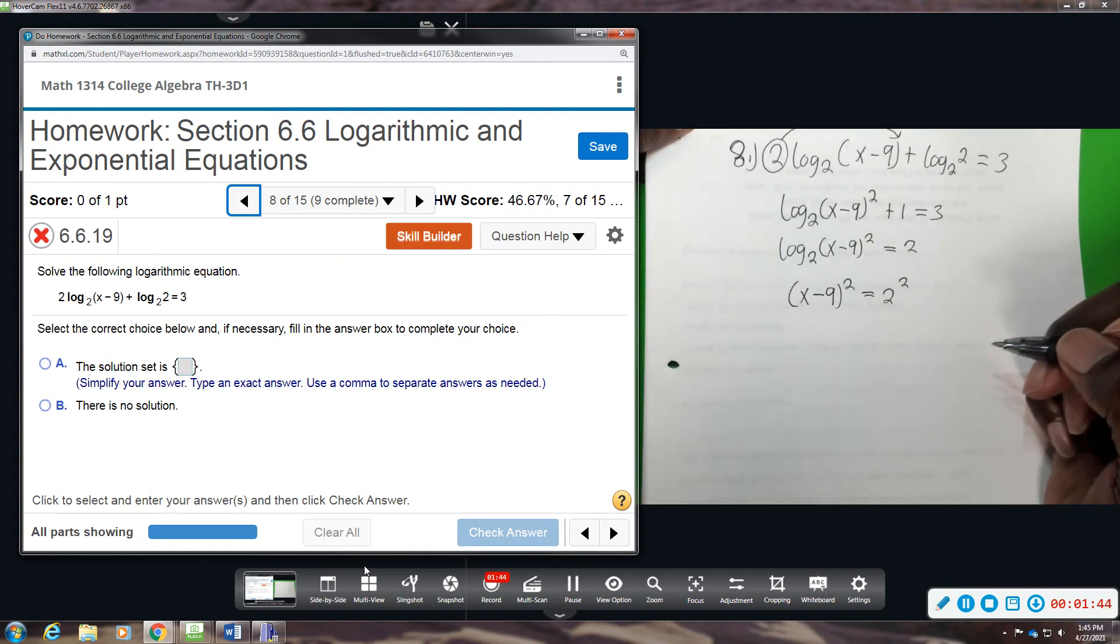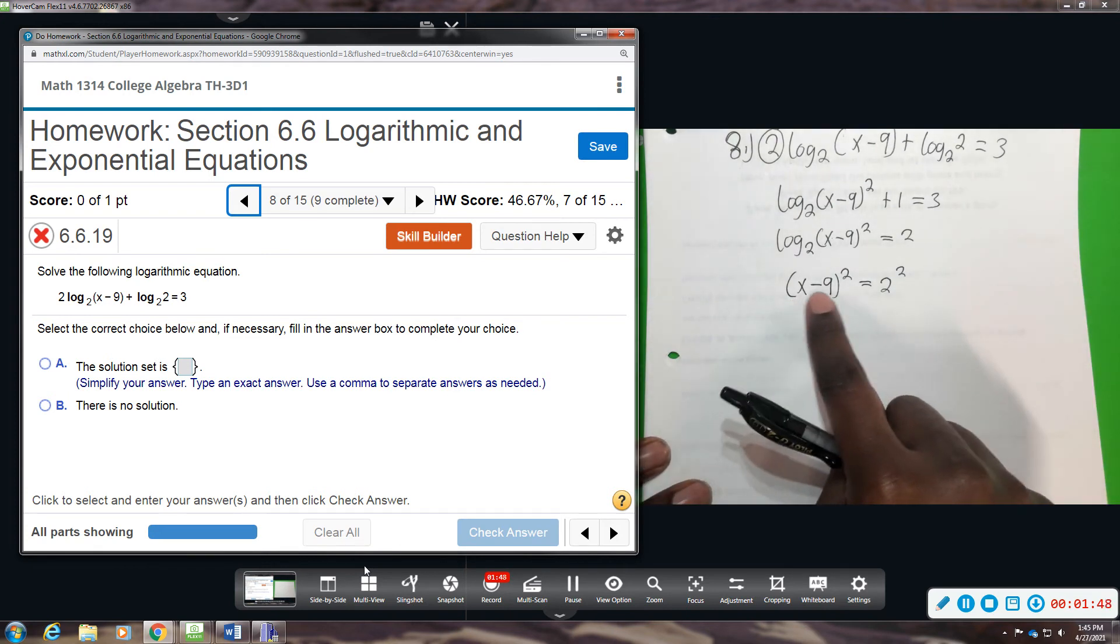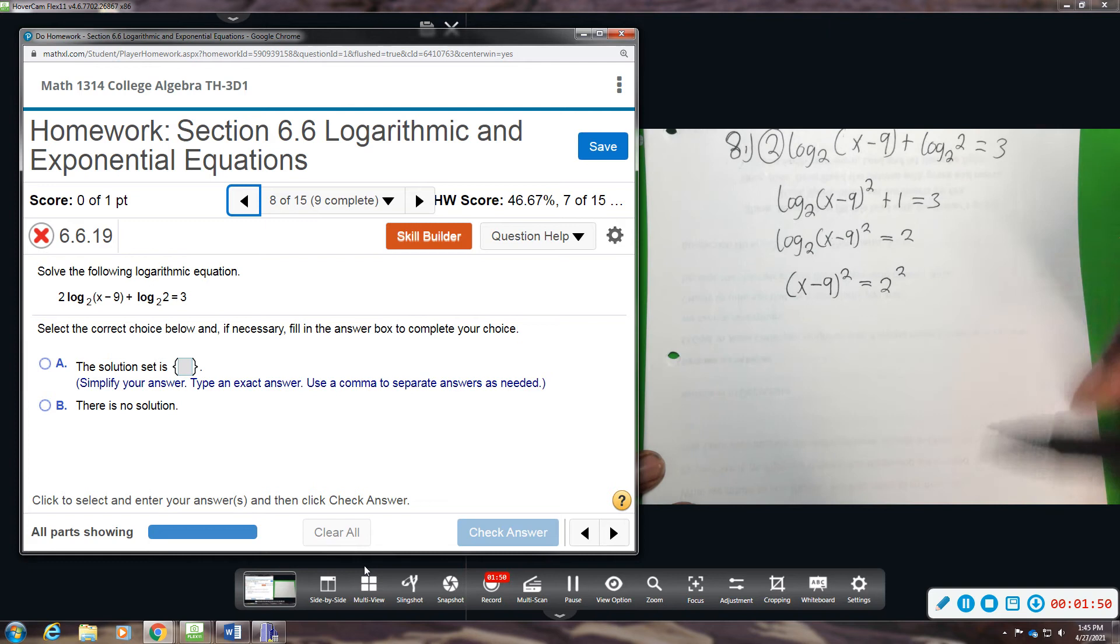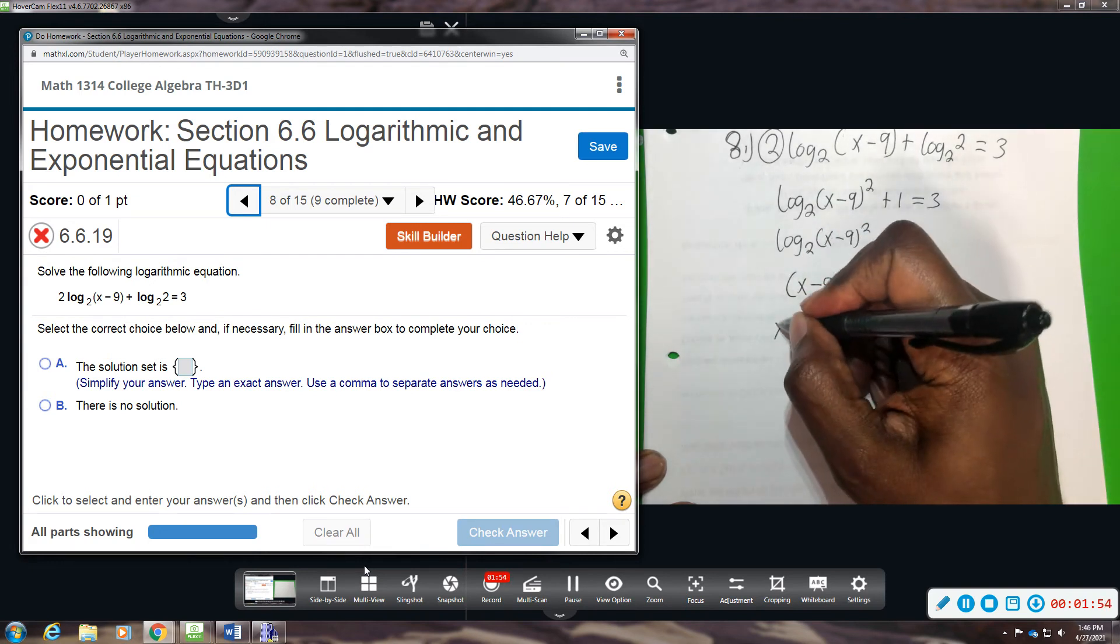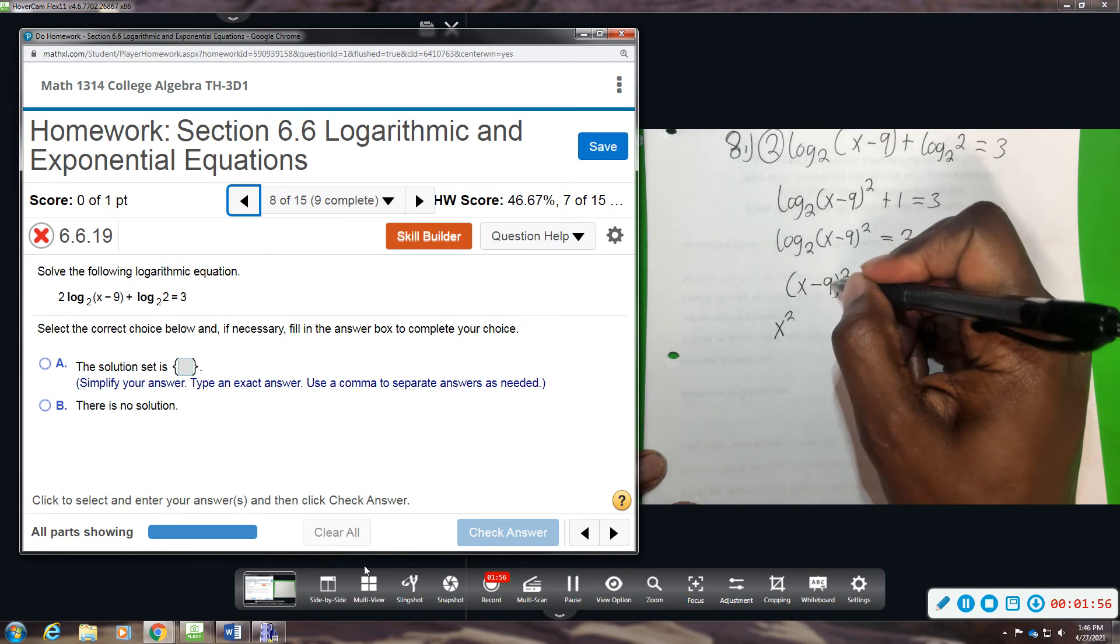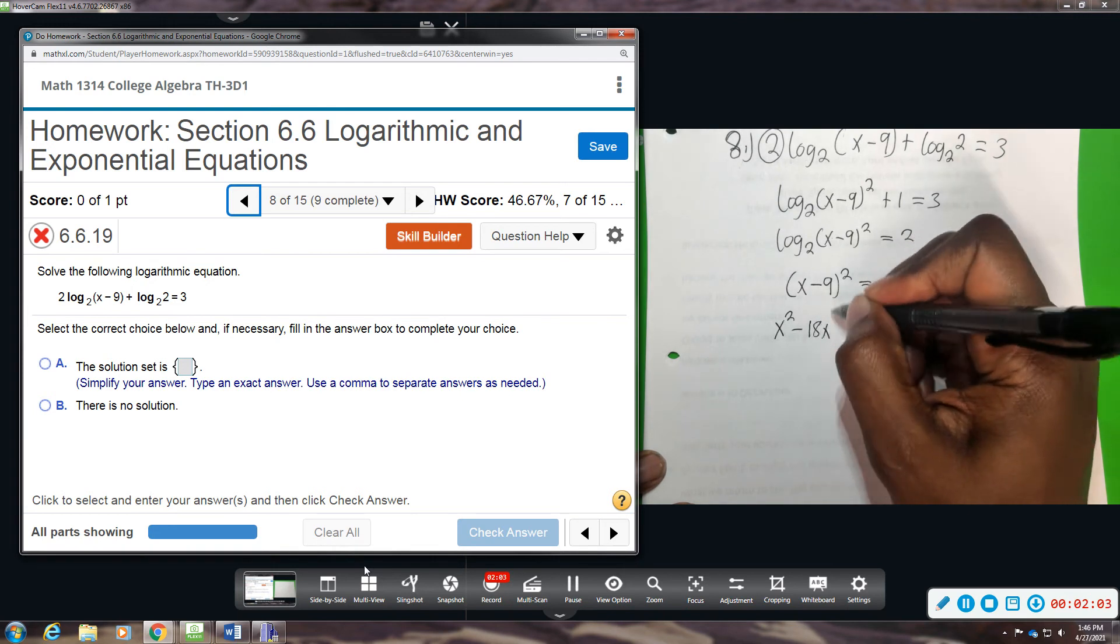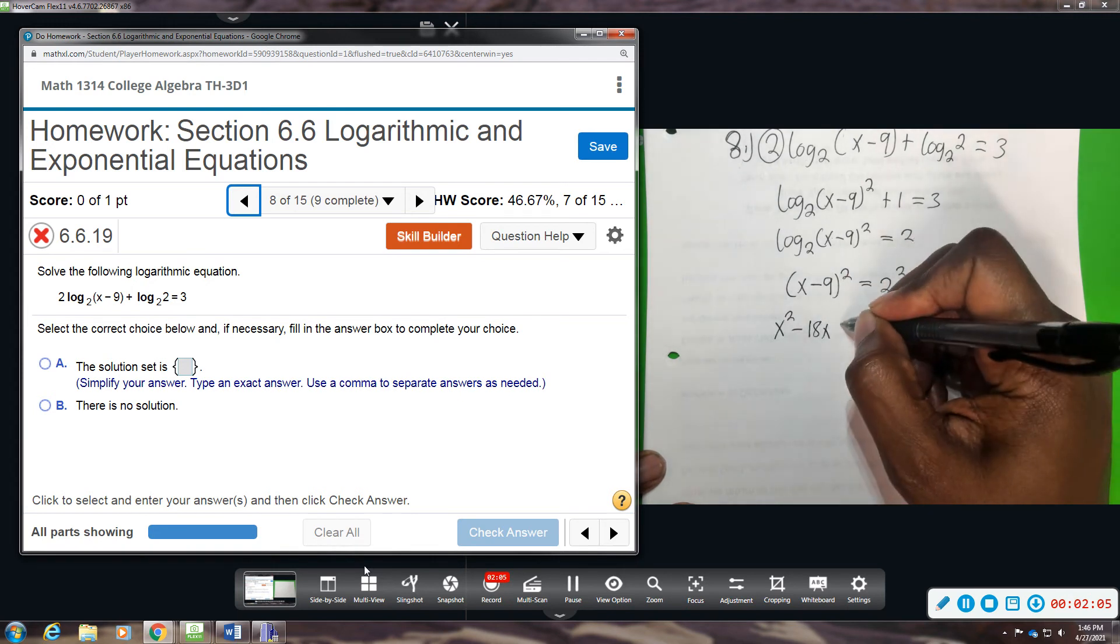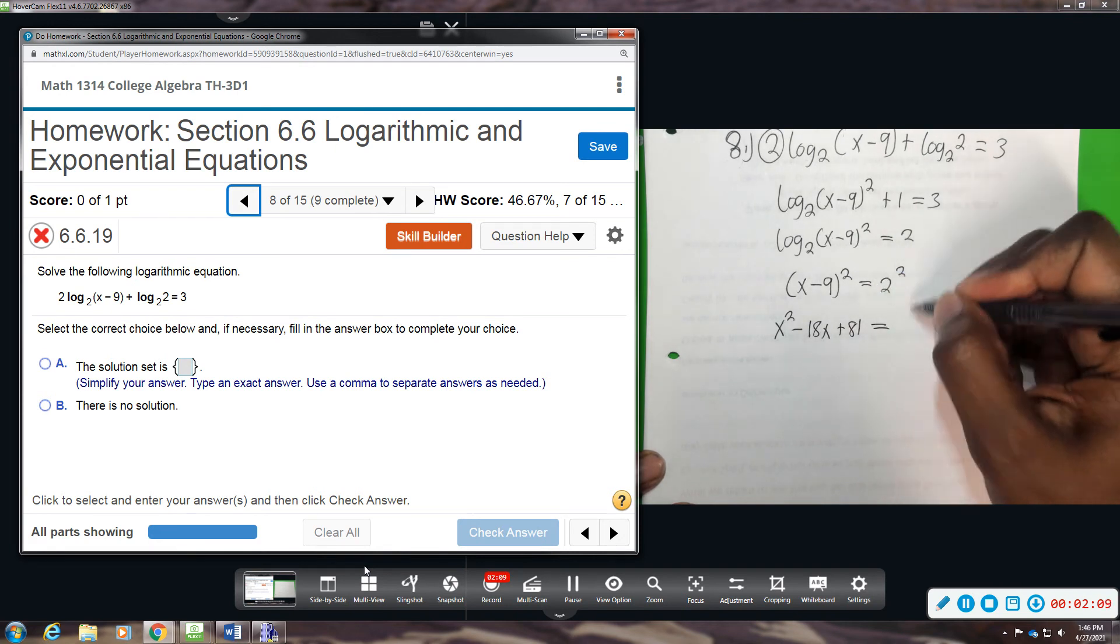All right, from here we're going to simplify. So we're going to FOIL distribute here and we're going to square that. So you square the first term, that becomes x squared. You multiply negative 9x and you double it because you'll have two of them. So it'll be negative 18x and you square the last term, which will give us a positive 81. And this is equal to 4.